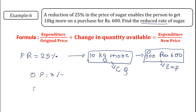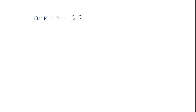Consider the original price as x rupees. The new price equals the original price minus the price reduced. Since the price reduction is in the form of a percentage, the new price becomes x minus 25 percent of x. 25 percent of x is 25 upon 100 into x, so the new price equals x minus x upon 4, which equals 3x upon 4.